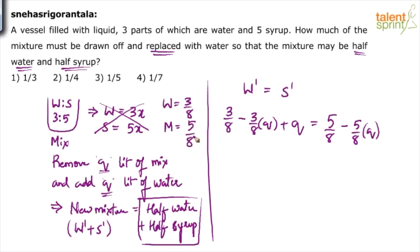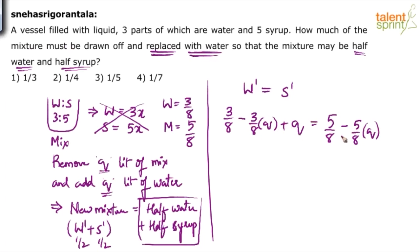Finally, w-dash equals half and s-dash equals half, so both are equal. Initial water was 3/8, from which we removed 3/8 of q, plus we added q — this plus q is important and does not appear on the syrup side, because only water was added. So: 3/8 - (3/8)q + q = 5/8 - (5/8)q. Simplifying: 2/8 equals (5/8 - 3/8)q, which gives 1/4 = (2/8)q.